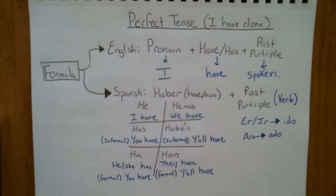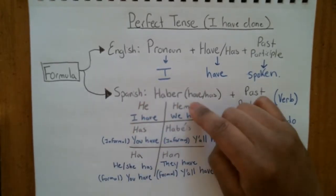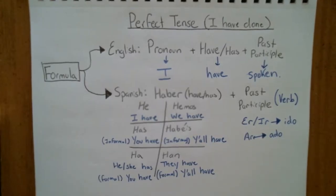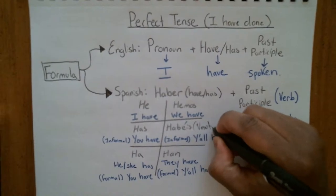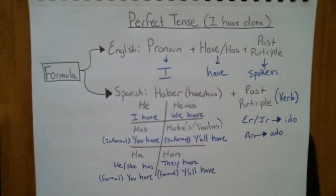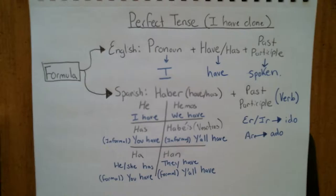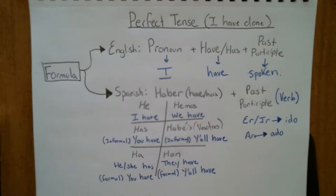We conjugate haber in the present tense based on who has done the thing. You should already be familiar with the six-box: yo, tú, él, ella, usted, nosotros, vosotros, ellos, ellas, and ustedes. Vosotros means y'all informal — you use it talking to a group of friends. It's mainly used in Argentina, Spain, and Chile. Most Spanish teachers won't teach vosotros, but I think it's a good idea to learn it.